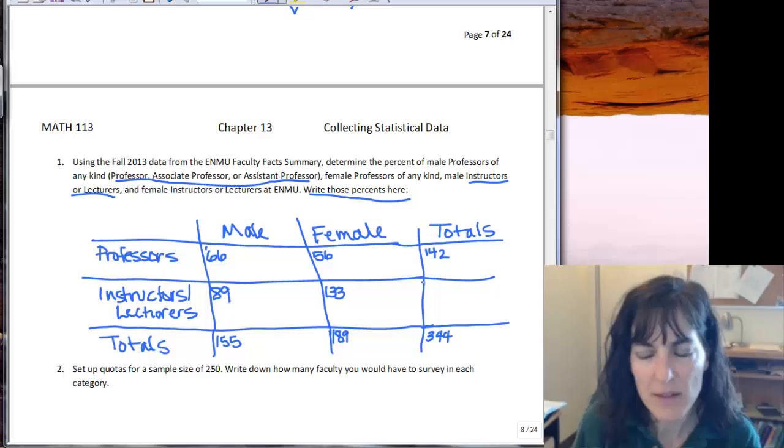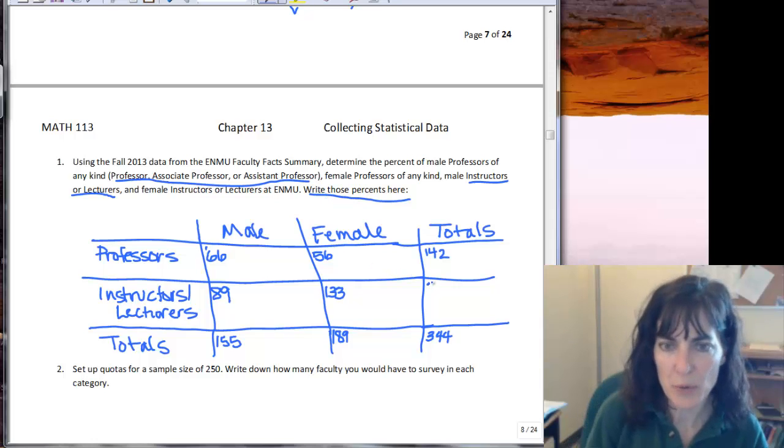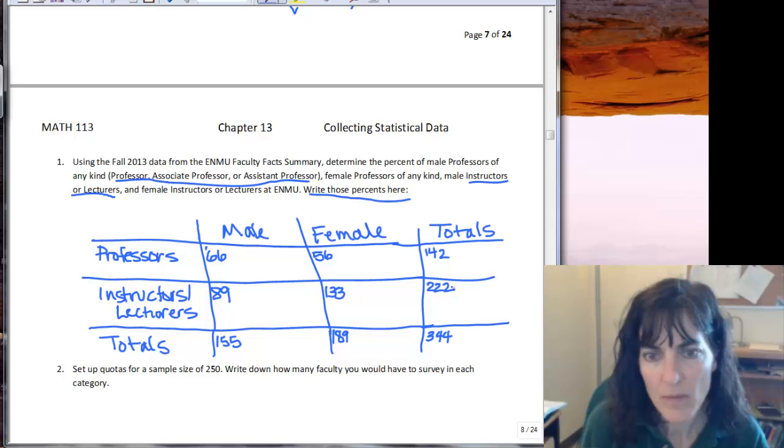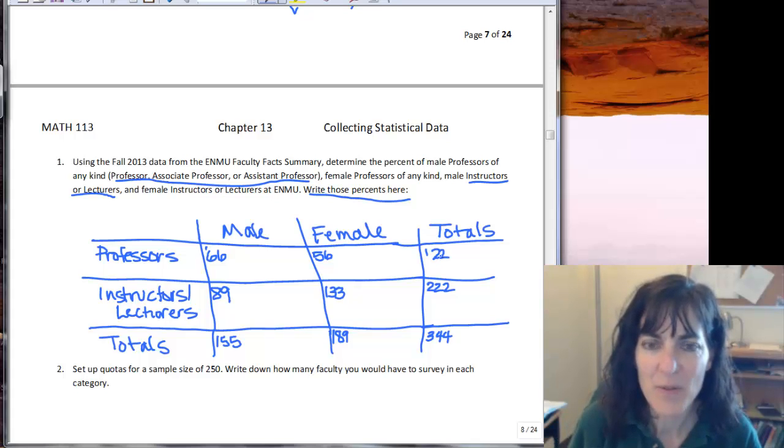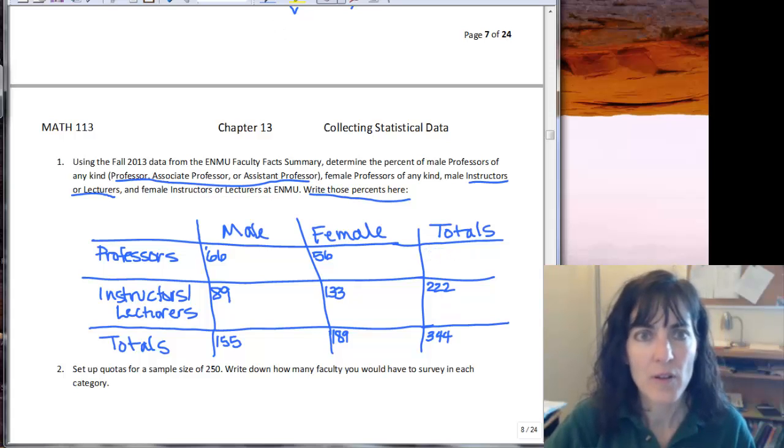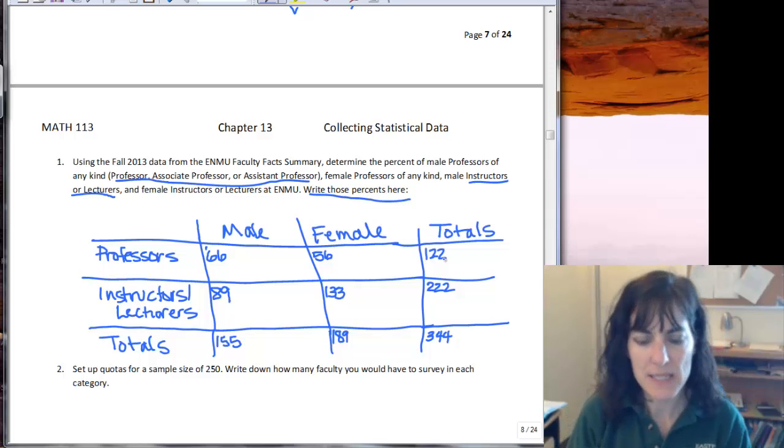And then I can add across and that should be 142, and then this one, 133 plus 89 is 222, and to that I'll add 142 and see I get 364. So let's try that again: 66 plus 56, 122. I am not having good luck today.